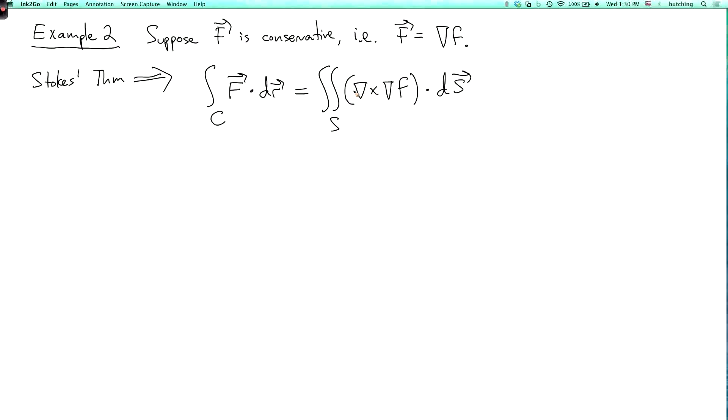So this is the curl of gradient of lowercase f. Now, is this true? Well, we know that this left-hand side integral over c of f dot dr, this is zero by the fundamental theorem of line integrals, because you get the function lowercase f evaluated at the start and end points of the curve, but for any parameterization of this curve, the starting and end points will be the same, because it's a closed curve. The boundary of a surface is always a closed curve.